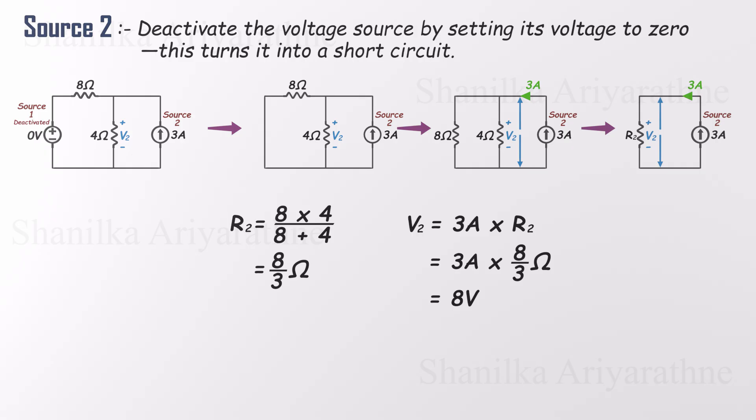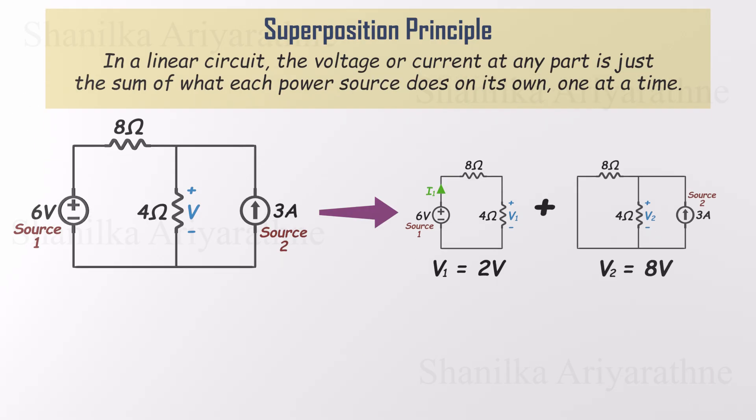Now that we've seen how each source contributes on its own, it's time to bring it all together. According to the superposition theorem, in a linear circuit, the voltage across, or the current through, any element is just the sum of the contributions from each independent source acting alone, with all other sources turned off. So let's add things up. The voltage source gave us 2 volts. The current source gave us 8 volts. Total voltage across the 4 ohm resistor? 2 plus 8 equals 10 volts. And just like that, we've solved the circuit using the superposition theorem.